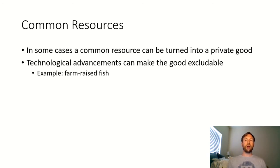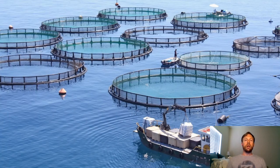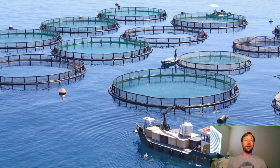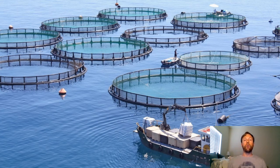There are cases where a common resource can be turned into a private good if technology advances to make the good excludable. An example is farm-raised fish. We now have the technology — not super high-tech — to put nets in the ocean, seed them with baby fish, and raise them in that area. They cannot migrate, and you can easily ensure you're the only one harvesting fish from those nets. That's a way of getting around the tragedy of the commons — you're not going to overfish waters that are being farmed by private firms. There are certainly other issues, like negative externalities with farm-raised fish, but one thing they do effectively is avoid the tragedy of the commons.